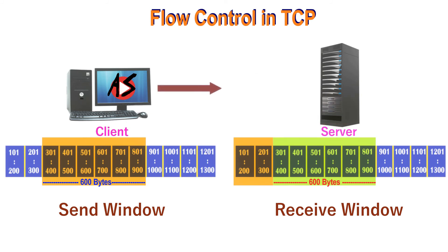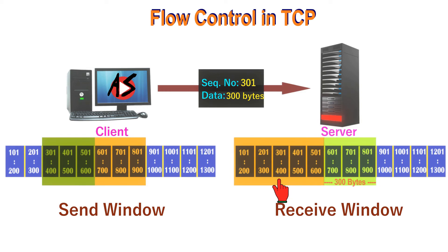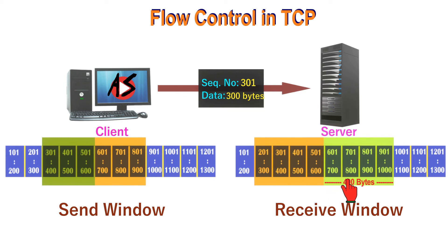Segment 6 is sent by the client after its process pushes 300 more bytes. The segment has sequence number 301 and contains 300 bytes. When it arrives at the server, the server stores them but must reduce its window size. After its process has pulled 100 bytes, the window closes from the left by 300 bytes but opens from the right by 100 bytes. The net result is the window size is reduced by only 200 bytes, not 300, making the receiver window size now 400 bytes.